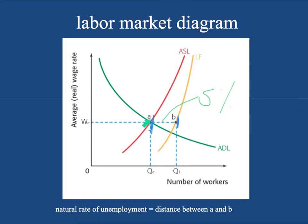As aggregate demand falls, the opposite is going to be true — the aggregate demand for labor curve is going to slide inward. Make sure you know how to draw this diagram and understand the relationships between A and B. As you go on to the next video, you'll have a better understanding of what the natural rate of unemployment means and its components — frictional, seasonal, and structural unemployment — as well as the impact of demand-deficient unemployment and expansions of aggregate demand.